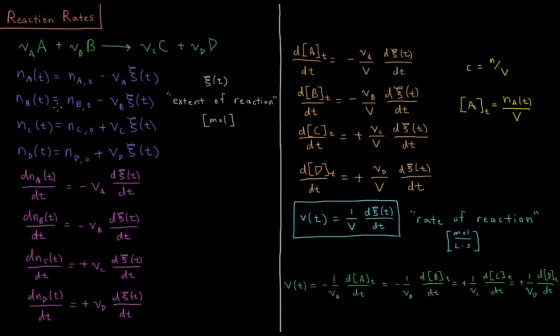Same thing for B: the number of moles of B is NB0 minus nu B times xi of t, also decreasing based off of its stoichiometric coefficient. For C, the product is equal to initial moles of C plus nu C times xi of t, so it is increasing over time with the extent of reaction. As it is for D, ND of t equals ND0 plus nu D times xi of t.